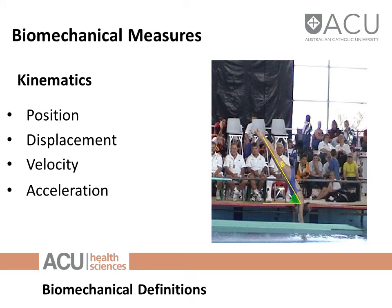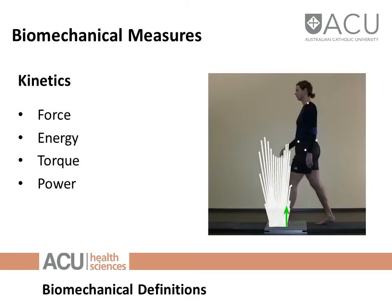Some examples of kinematics include the position of a person, segment, or object in space; when that object moves, its displacement — which might be in a straight line or a rotation, such as a segment rotating 20 degrees around a joint; velocity, the rate at which it's moving; and acceleration, the rate at which that movement is changing. Some examples of kinetic measurements are force, energy, torque, and power.